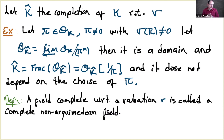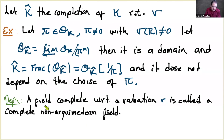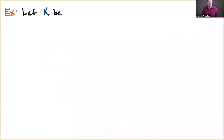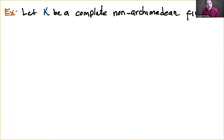Now let K be a local field with a normalized valuation. Two valuations are equivalent if they define the same topology. Equivalent valuations differ only by multiplication by a real number. A normalized valuation is one where there exists an element with valuation exactly 1, which is equivalent to saying the valuation group is ℤ.